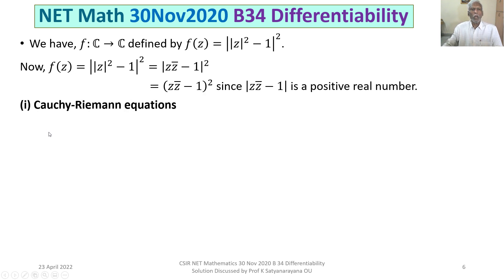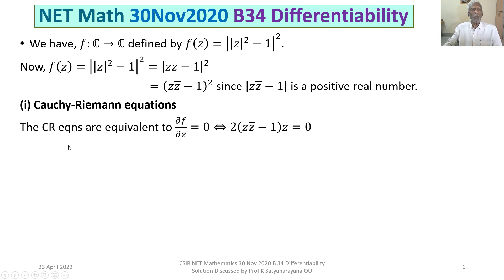To discuss the differentiability of f(z), we must first find where the Cauchy-Riemann equations are valid. At those points we also need to test the continuity of the first-order partial derivatives of u and v. So let us first discuss at what points the Cauchy-Riemann equations are satisfied. The complex equivalent of the Cauchy-Riemann equations is ∂f/∂z̄ = 0.